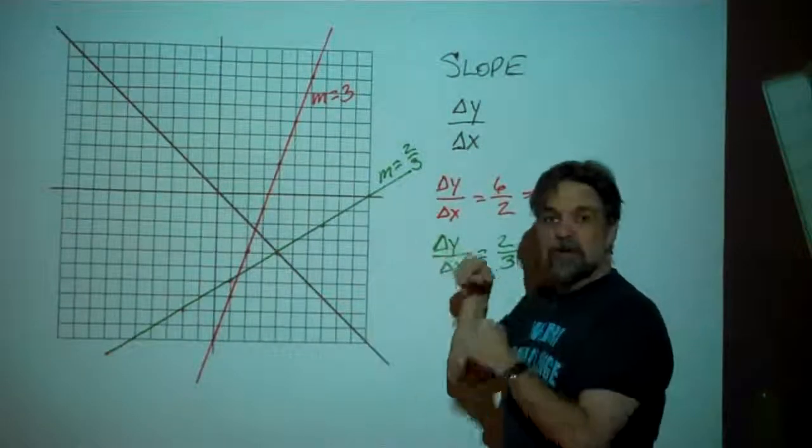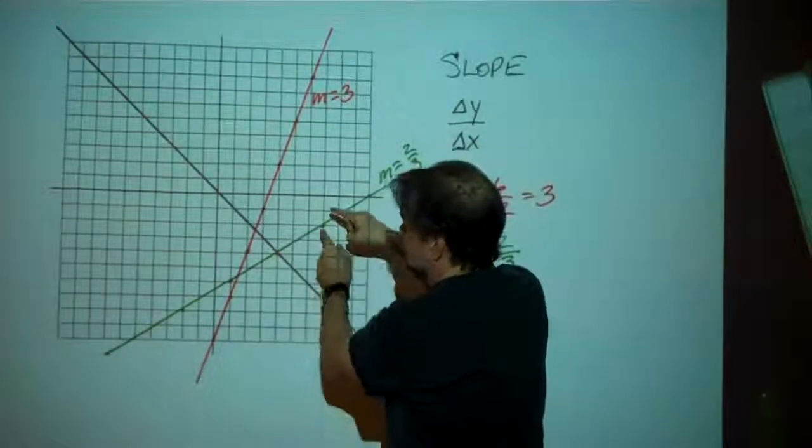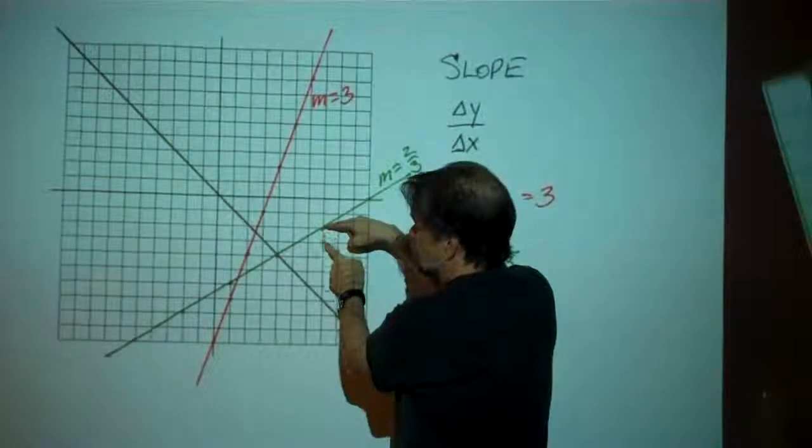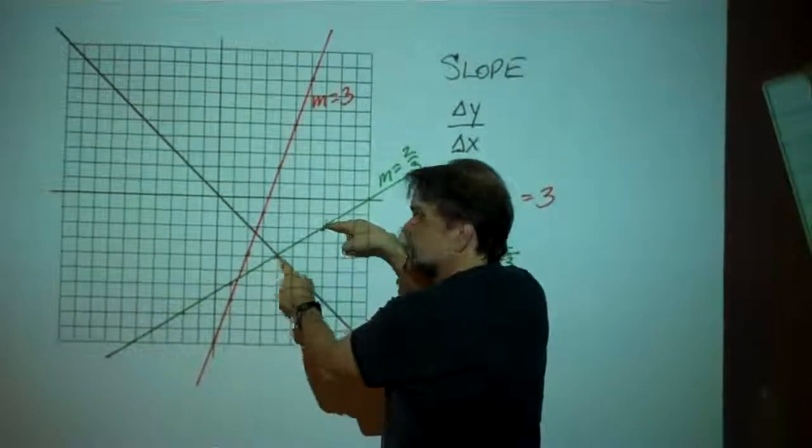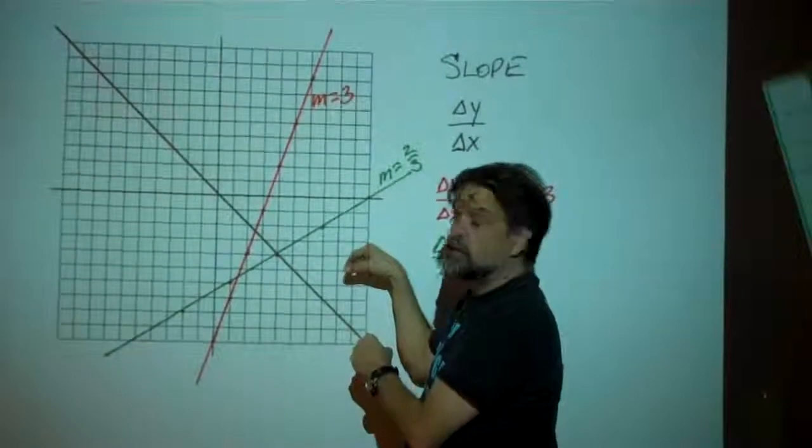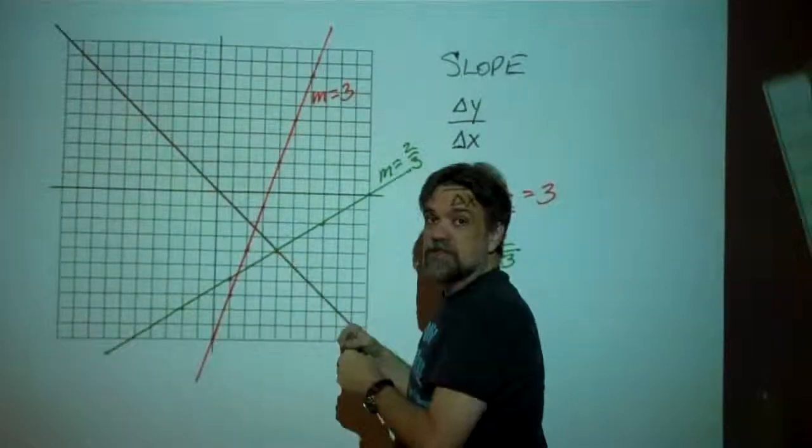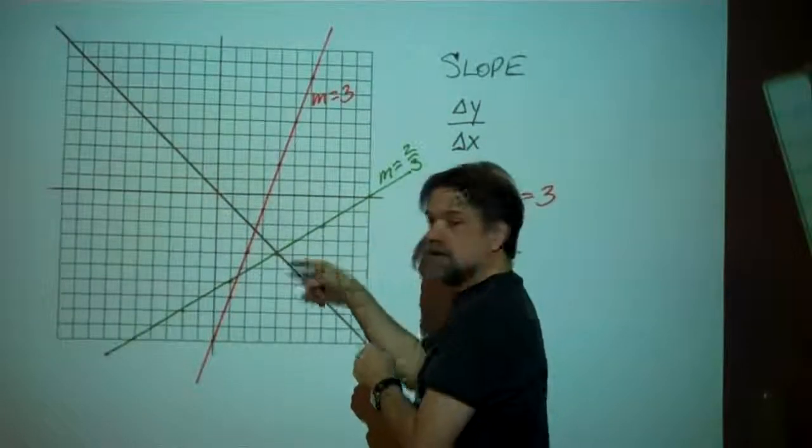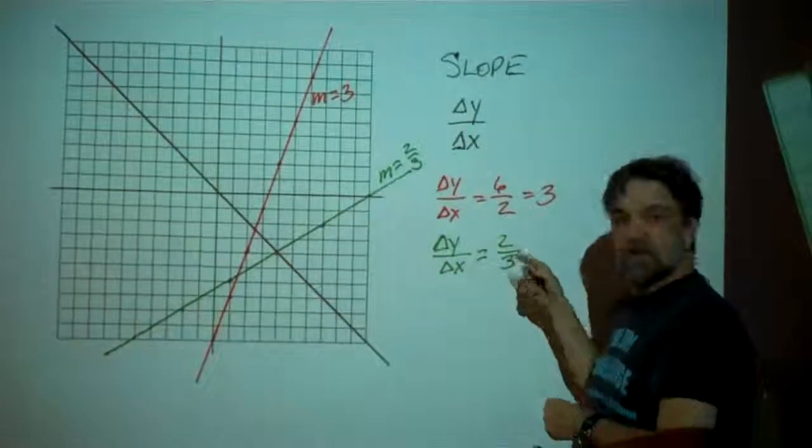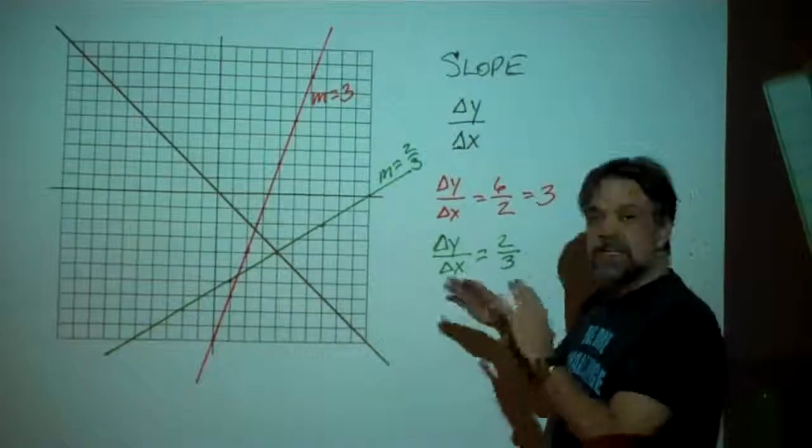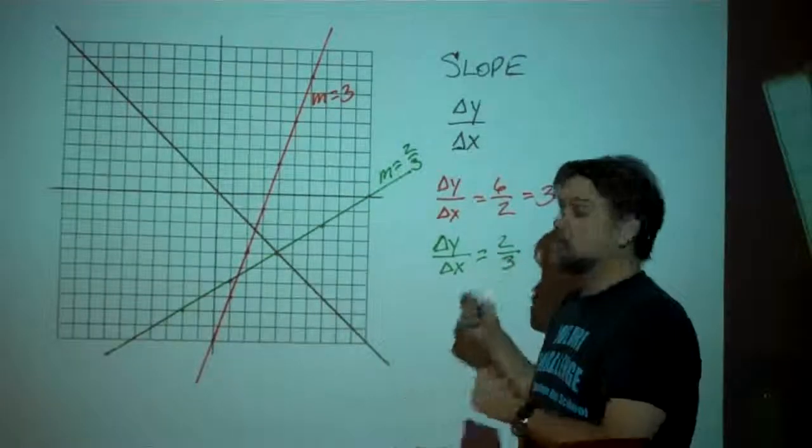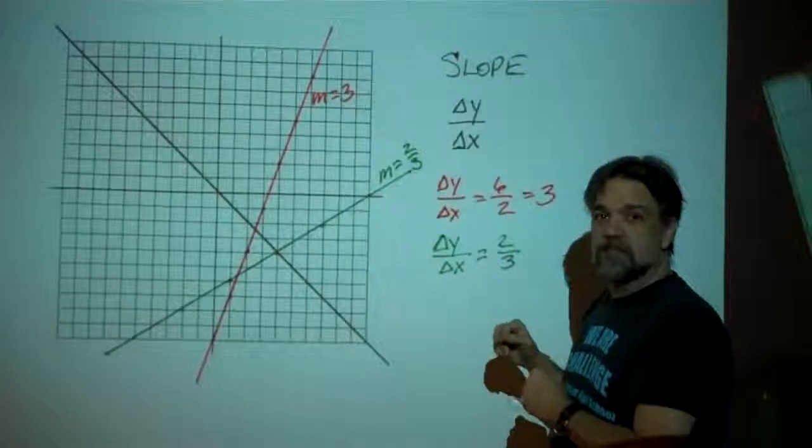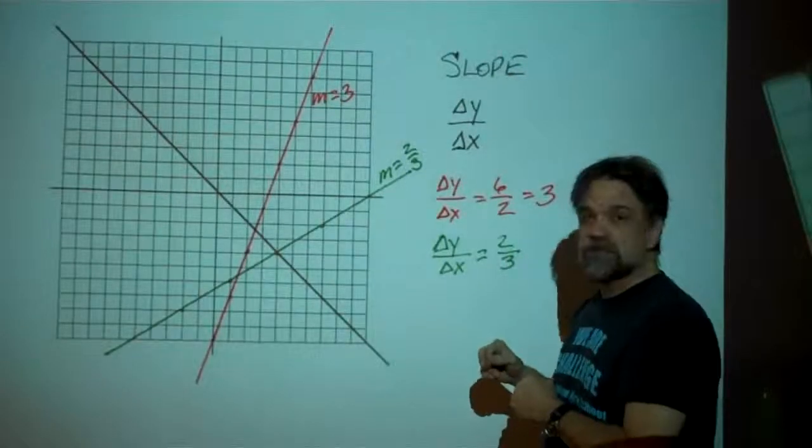So it works out no matter what two points you use. As a matter of fact, I could think about going backwards. What if I'm going from this point to this point? My y would go down 2 and my x would go to the left 3. Down 2 means y is decreasing by 2, and to the left 3 means x is decreasing by 3. So that would be negative 2 divided by negative 3, which also simplifies to be 2 thirds. So it really doesn't matter which two points you pick or in what order you pick them.